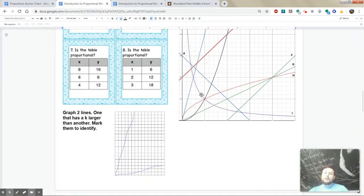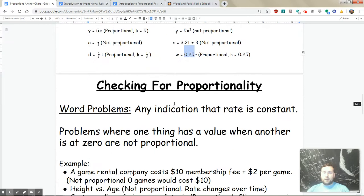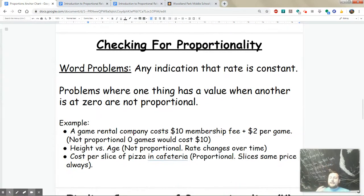The last skill is how to recognize if a word problem is talking about a proportional relationship. If there's any indication of a constant rate, then it's proportional. Also, any indication of a value that starts other than (0, 0) would not be proportional.